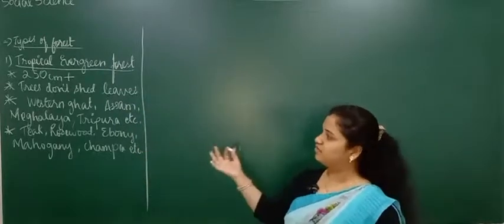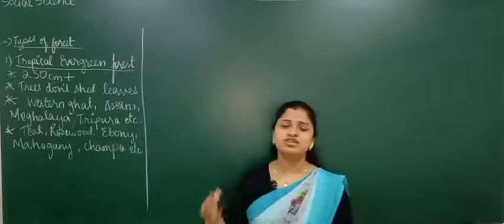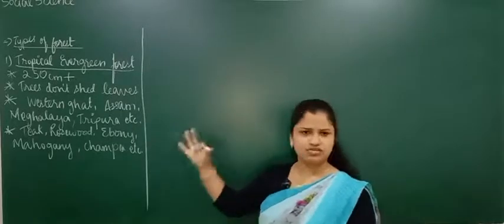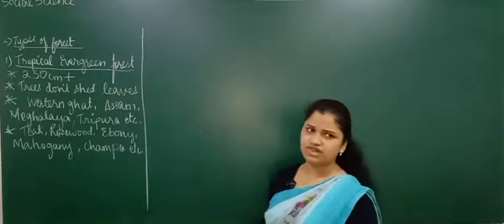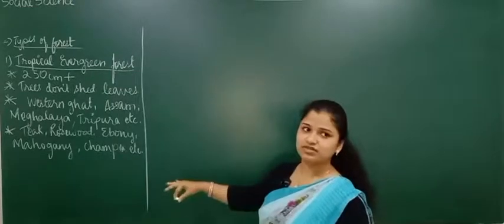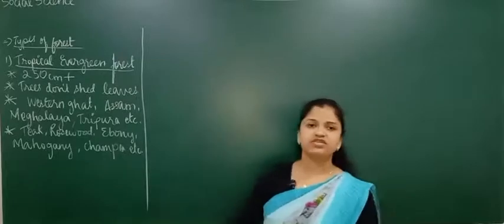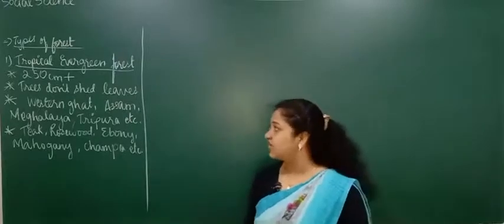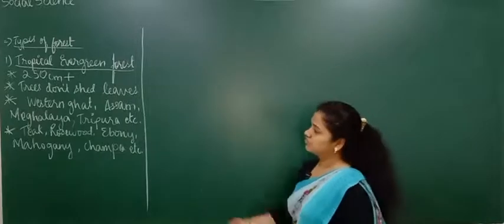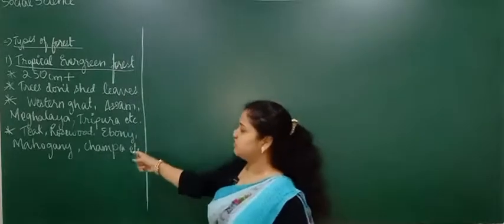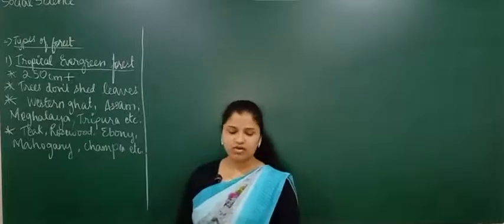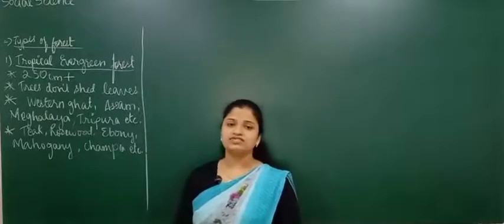These notes will help you answer any question in the board exam. For tropical evergreen forest, remember: rainfall is more than 250 centimetres, trees never shed their leaves, it is found in the Western Ghats, Assam, Meghalaya, and Andaman and Nicobar Islands, and the trees found here are teak, rosewood, ebony, and mahogany. You can pause the video and take down the points anytime.